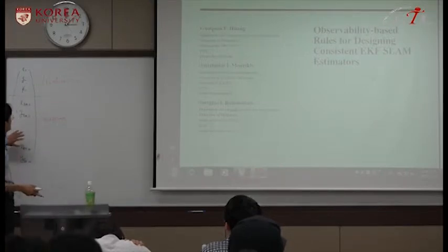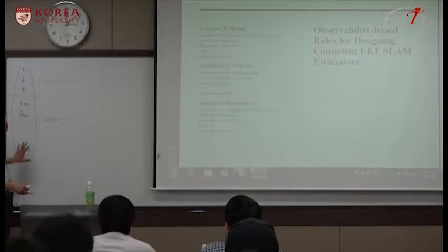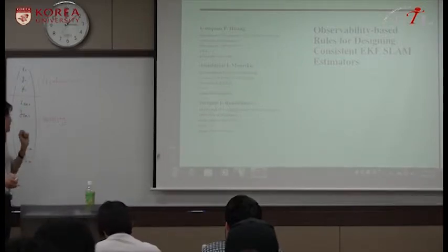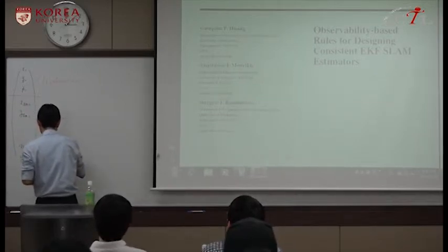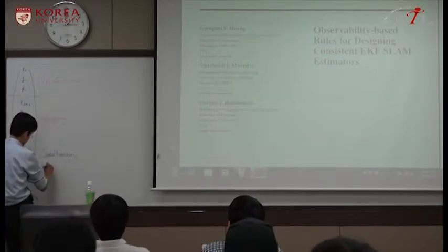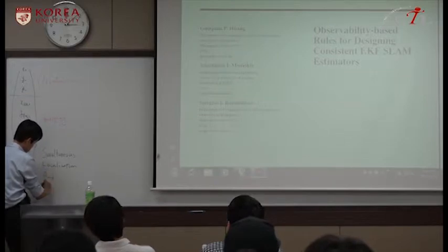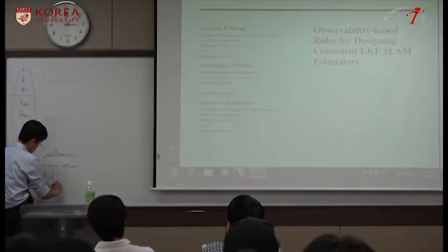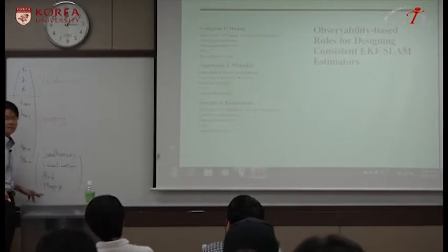So in mobile robotics, what they do is to estimate localization, to estimate robot pose, as well as to estimate the landmark location is the key problem. So that's what we say, SLAM - simultaneous localization and mapping. So first abbreviation is S-L-A-M, SLAM.